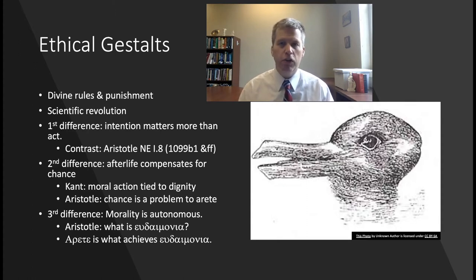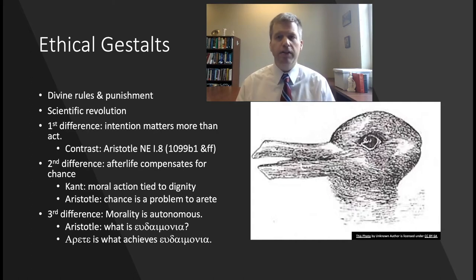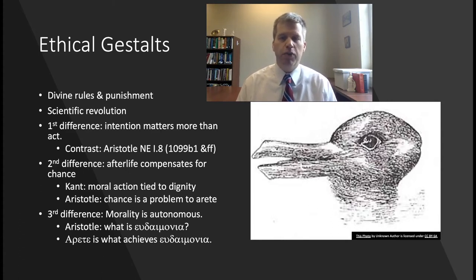Since the scientific revolution, the appeal to God as a ground of morality has been called into question, and in contemporary society there's no universally agreed ground to morality. Immanuel Kant, an 18th-century figure, tried to ground morality in reasons so it would have more universal appeal. Kantian ethics carries over much of the framework of earlier appeals to divine rules. I want to focus on three differences between Aristotle's ethics and this more contemporary Kantian perspective.